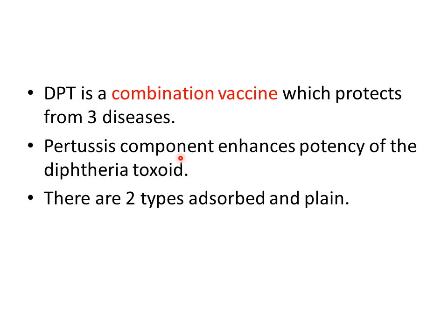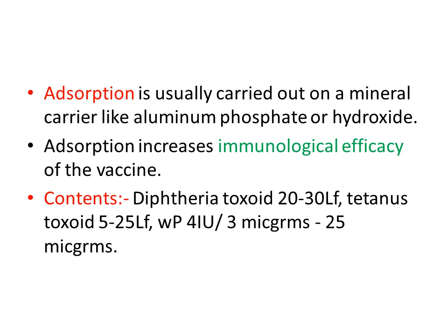The Pertussis component enhances the potency of diphtheria toxoid. There are two types of DPT: adsorbed and plain. Adsorption is usually carried out on a mineral carrier like aluminum phosphate or hydroxide. This adsorption increases the immunological efficacy of the vaccine, meaning more antibodies are formed against these organisms when re-infection occurs.